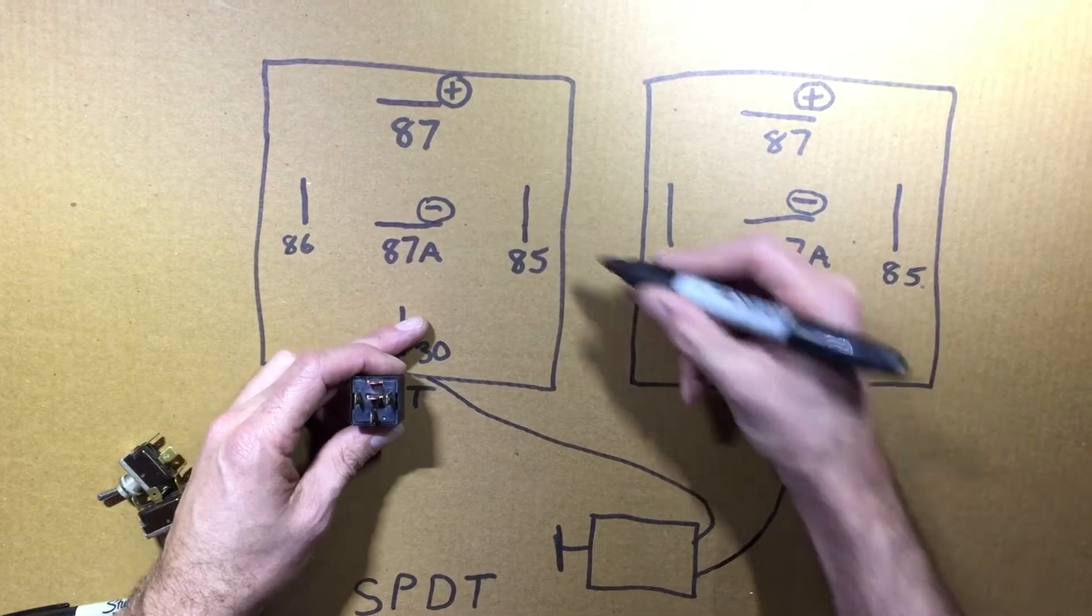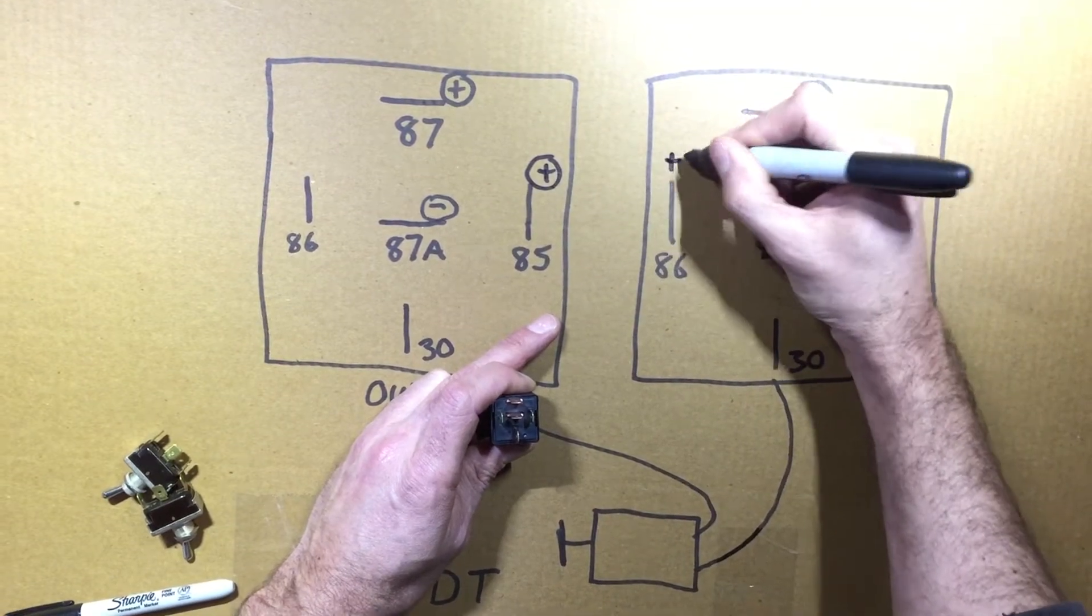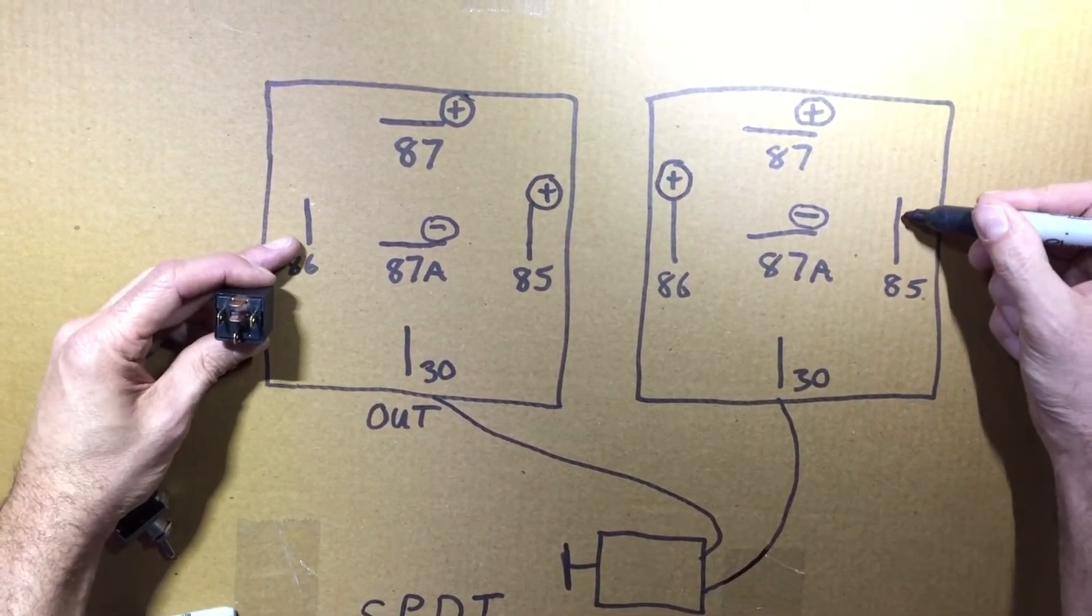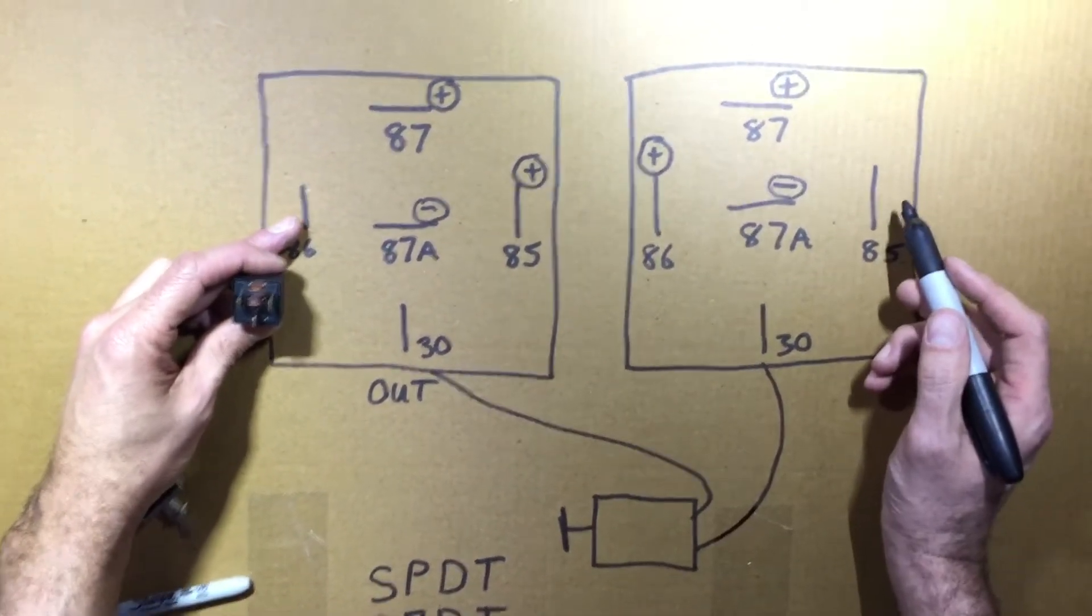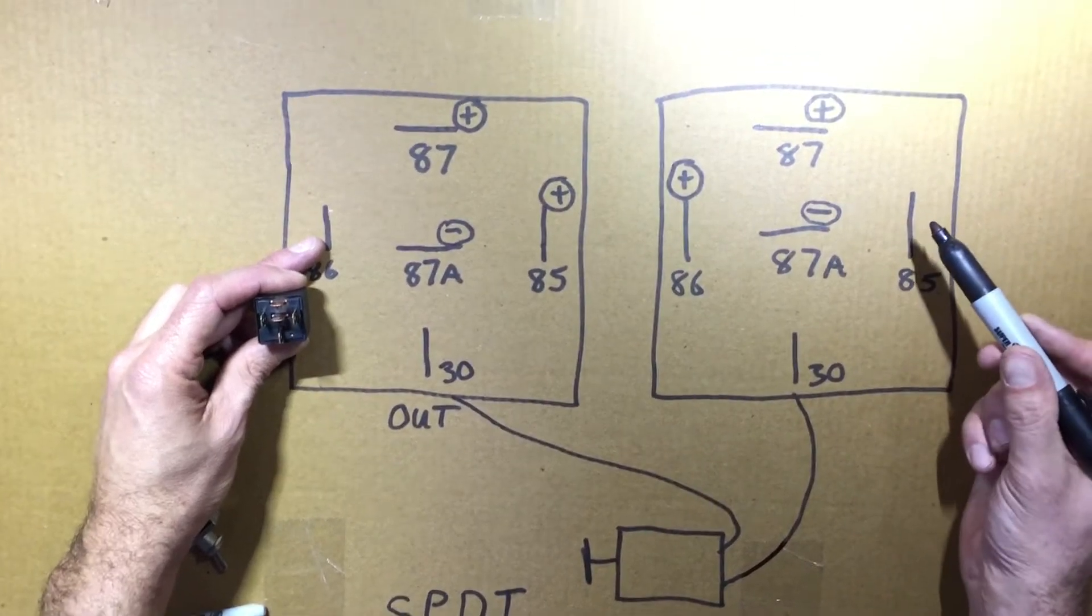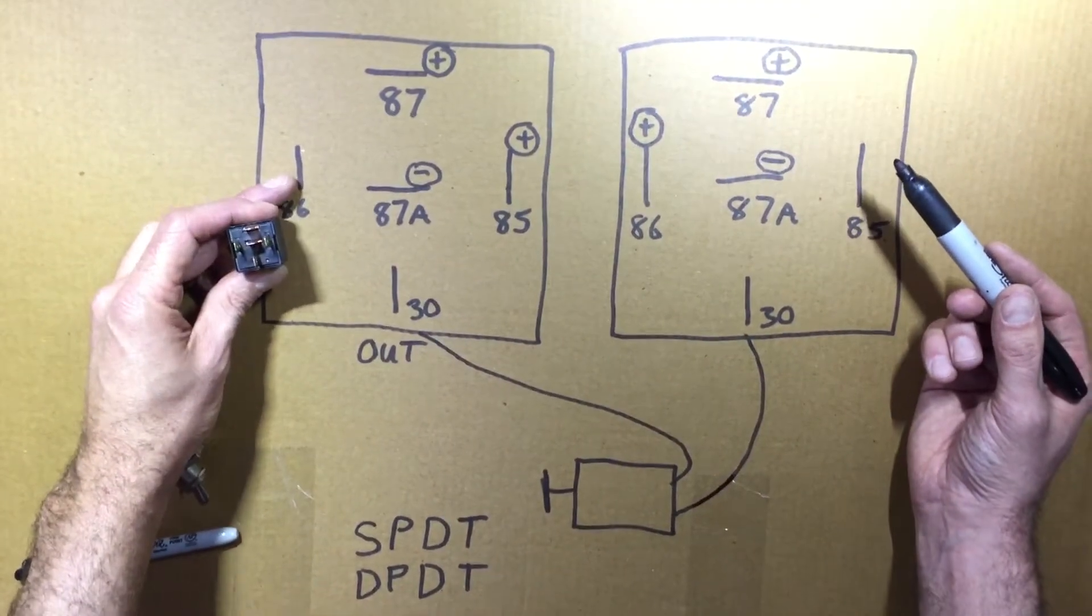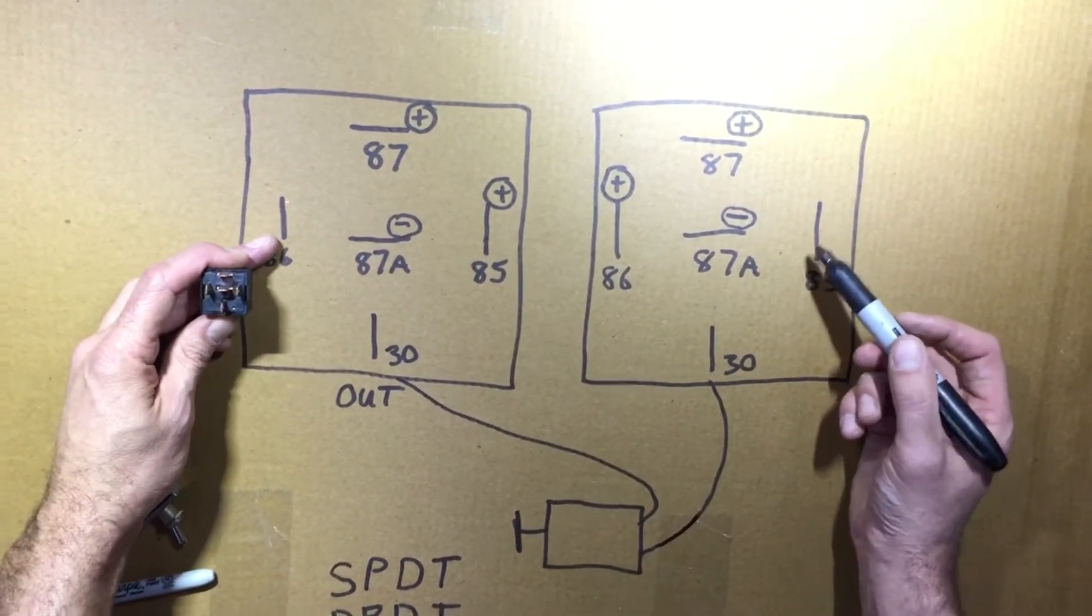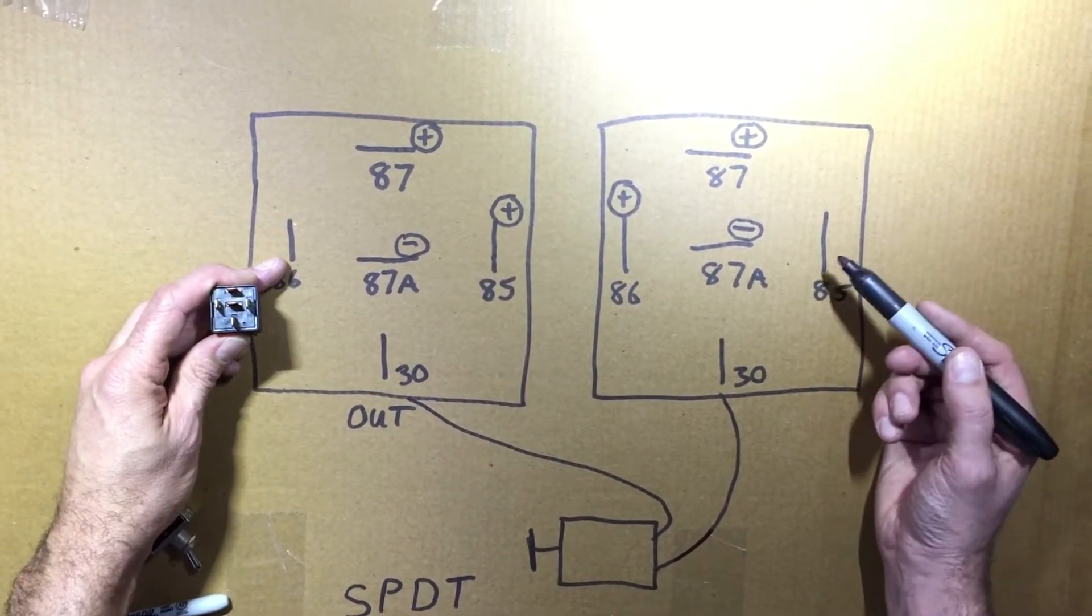So we've got negative in the middle, positive on the top. Normally closed is right here. When we open it up, we get positive. Now we can only open one relay at a time, otherwise we'd be sending positive down both sides. So what we're going to do is really we just need positive on one of these, so we'll put positive here, we'll put positive here. So that can be jumpered together, positive, positive, positive, positive. Now by putting negative to here or negative to here, that's going to change the direction of our motors. So this is a double pole double throw.